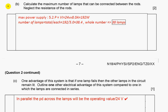Calculate the maximum number of lamps that can be connected between the rods. Neglect the resistance of the rods. Maximum power is 192 watts. According to section 5.2, power is voltage times current. Number of lamps is total power divided by each power. Each power is 5 watts, so we get 38.4. We need a whole number of lamps, which is why we use 38 lamps.